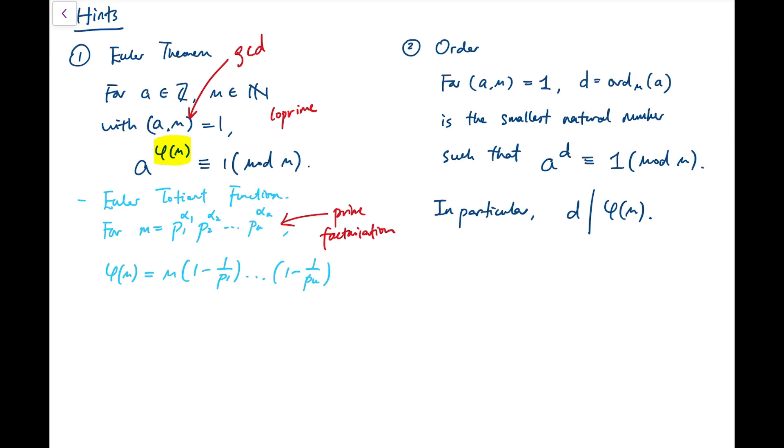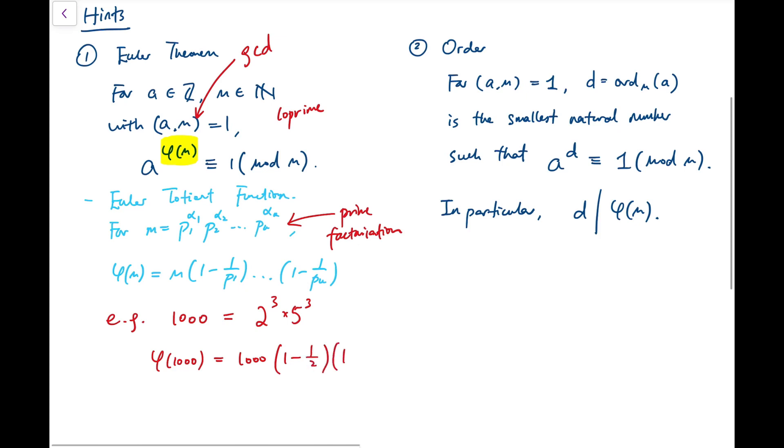For example, for our problem, we're talking about 1000. 1000 can be split into 2³ times 5³, and that means φ(1000) equals 1000 times (1 - 1/2) times (1 - 1/5), and that will be 400.